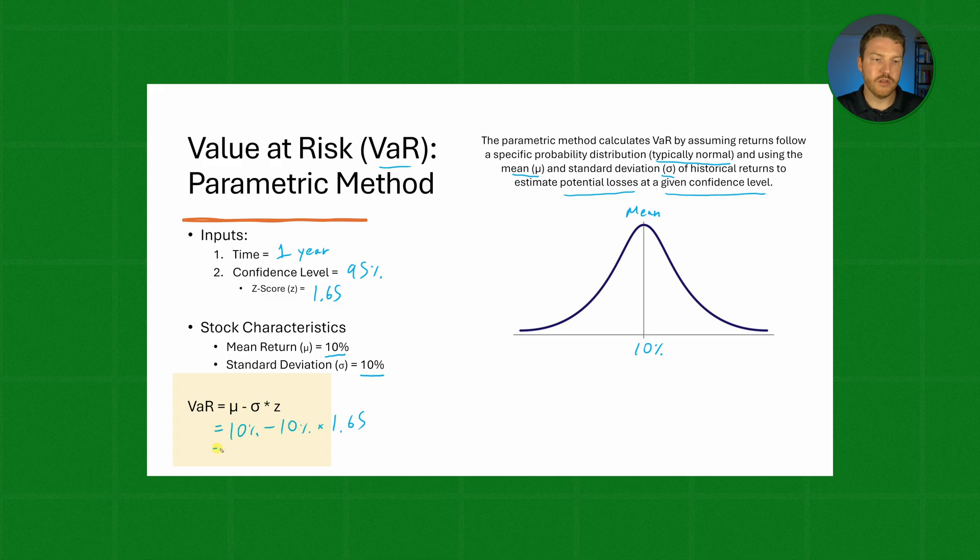If we solve for this, we'll find that our VaR is 10% minus 16.5%, which gives us a value of negative 6.5%. Let's think about what that means.